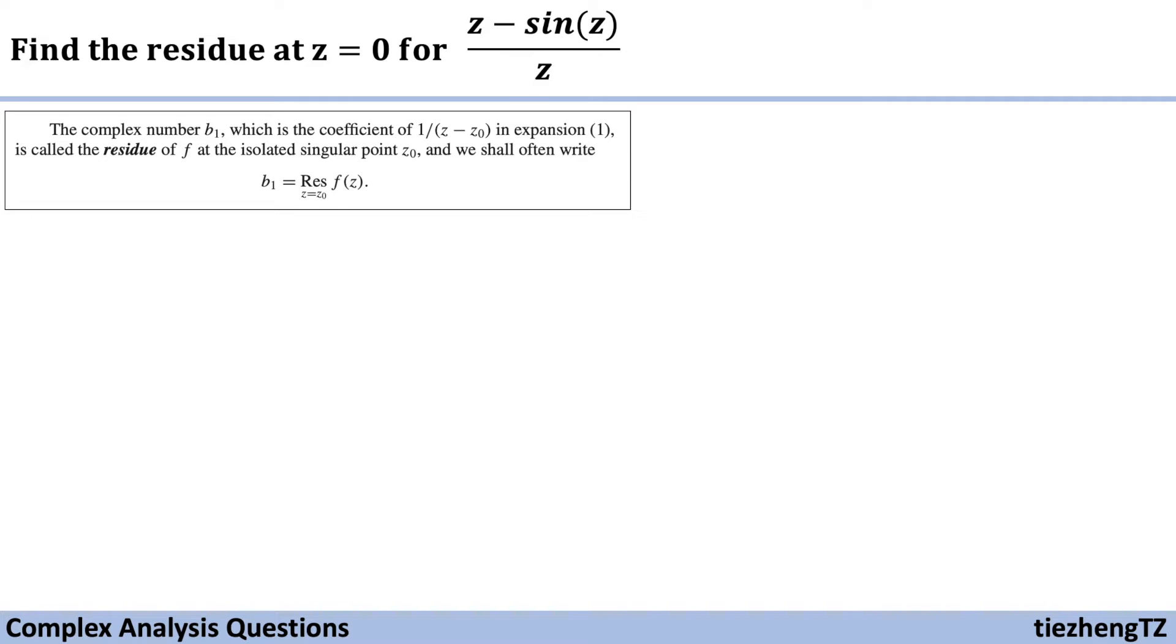In our question, the function f(z) is (z - sin(z))/z, which equals 1 - (1/z)sin(z).